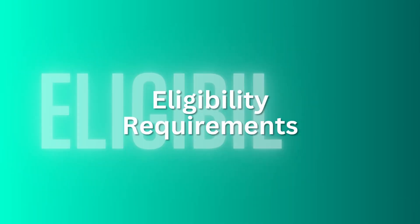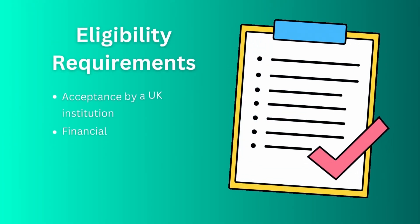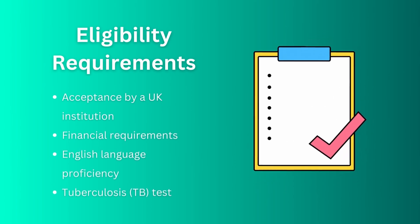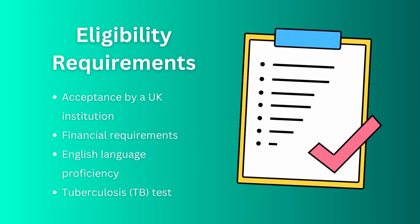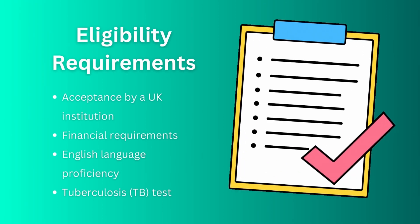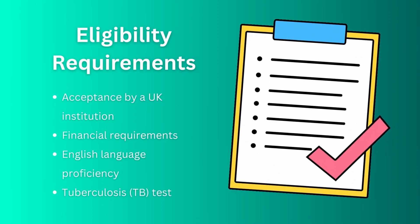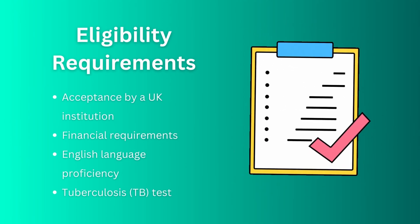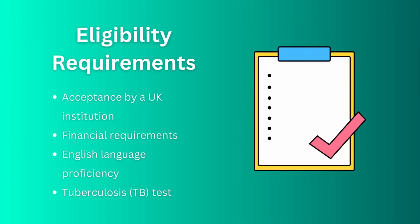Now let's discuss the eligibility requirements. To be eligible for a UK student visa, you will need an acceptance letter from a UK institution, proof of your financial requirements, a proof of your English language proficiency, and a TB or tuberculosis test. You have to meet all of these requirements — if you miss even one of them, you will not be eligible for a UK student visa.